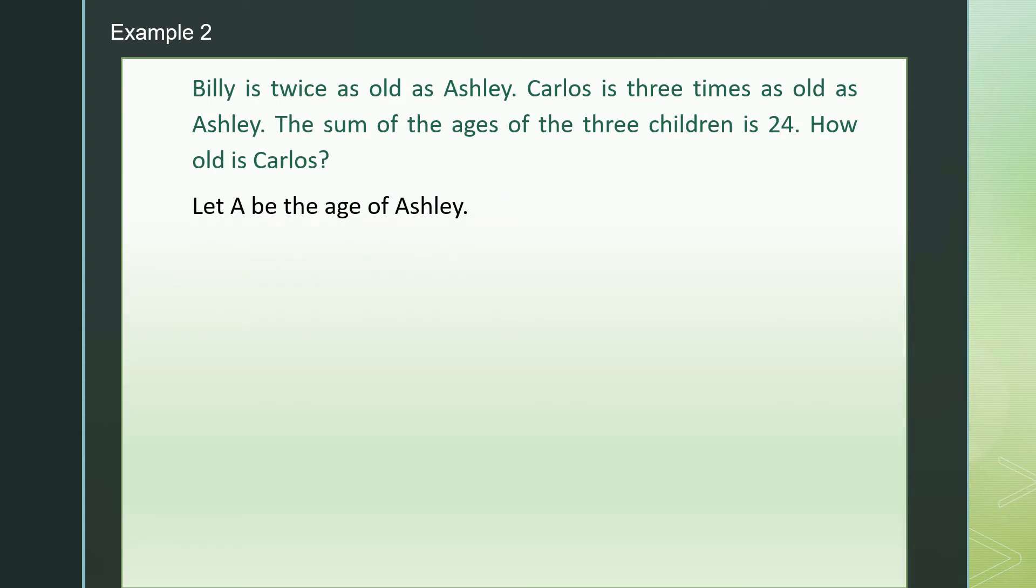Let A be the age of Ashley. Ashley is A years old. Billy is twice as old as Ashley, so Billy is 2A. Carlos is 3 times as old as Ashley, so Carlos is 3A. The sum of the ages of the three children is 24. We add them up equals to 24.